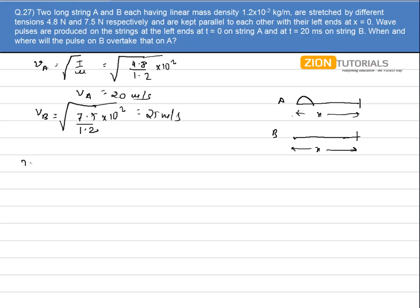So I can write the velocity of B is equal to x by time taken by B to reach that point. And the velocity of A can be written as the distance travelled by the time taken by A to reach that point, and that will be equal to t plus 20 millisecond. So it will be t plus 0.020 seconds.